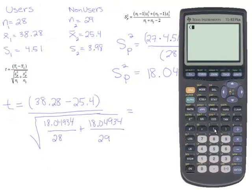Okay, so let's type it in. We'll try to do it all at once. So we'll do 38—again, you see I started a parenthesis in the beginning, right? So 38.28 minus 25.4. Close up the parenthesis. Divide by the square root. So I'll press second square root.